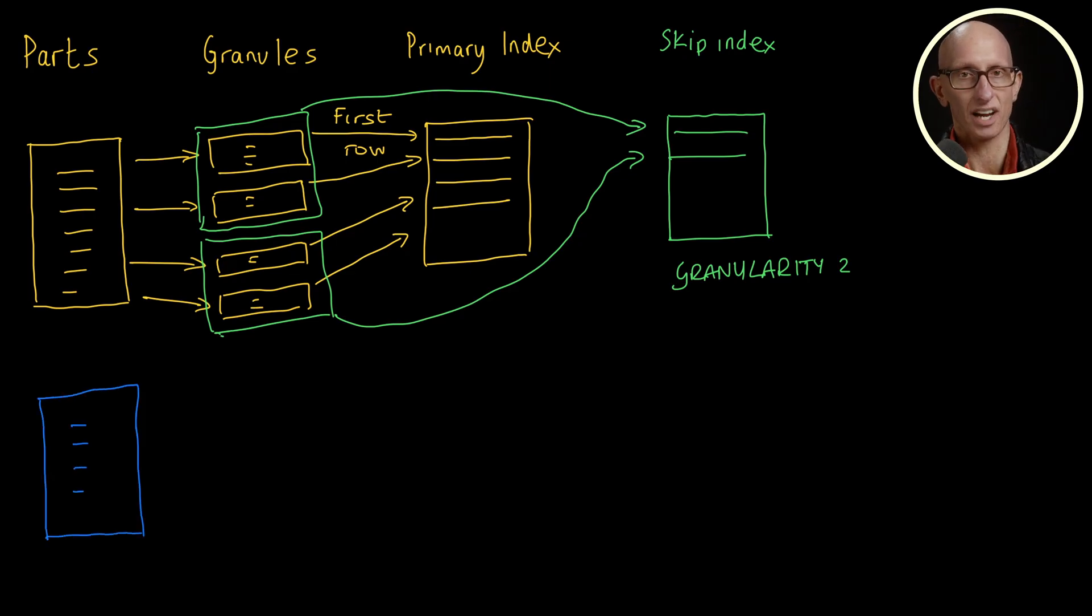The third technique is called projections. Remember that the sparse primary index is based on the data being sorted on disk in lexicographical order by the primary key columns. This means a table can only have one primary index. But there might be some queries that filter on different columns and therefore need a different primary key and a different ordering of data on disk. And this is exactly what projections do.